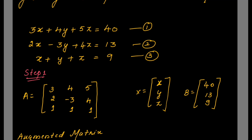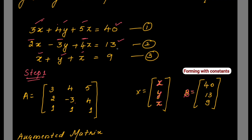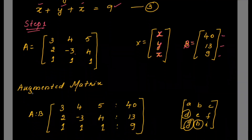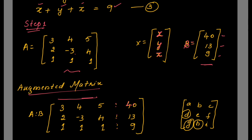First, write the coefficient matrix using only the coefficients: 3, 4, 5 / 2, minus 3, 4 / 1, 1, 1. The variables are x, y, z. Then form the constant matrix with values 40, 13, 9. The augmented matrix combines the coefficient matrix and the constant matrix separated by a dividing line: [3, 4, 5 | 40], [2, minus 3, 4 | 13], [1, 1, 1 | 9].